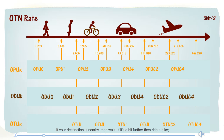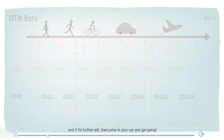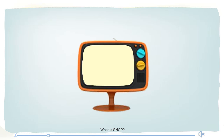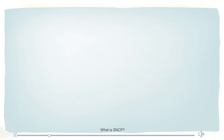If your destination is nearby, then walk. If it's a bit further, then ride a bike, and if it's further still, then jump in a car and get going. What is SNCP? Simply put, it means dual sending and selective receiving.